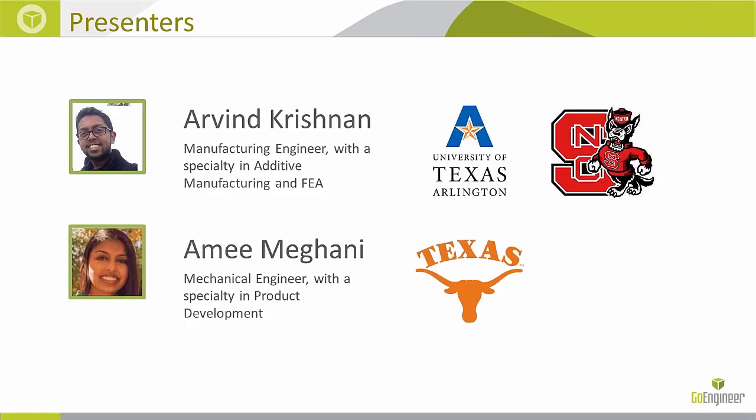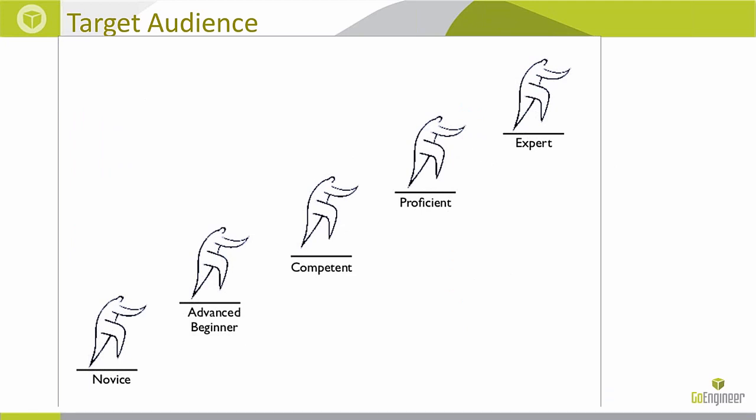My name is Ami Magani. I'm a mechanical engineer from the University of Texas at Austin. I specialize in product development and have 10 years of industry experience, four of those in injection molded plastics. Arvind Christian is a manufacturing engineer with a specialty in additive manufacturing and simulation.